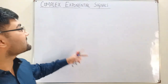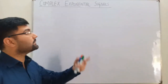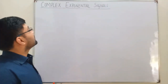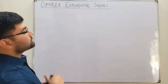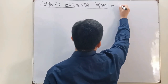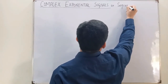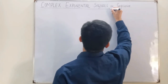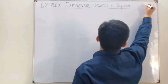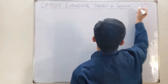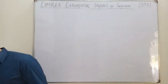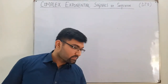The first type we saw were complex exponential signals in the continuous time domain. Today we see them in the discrete time domain. Here they are also called complex exponential signals or sequences. The term 'sequence' is used in the discrete time domain — I have not seen it used in the continuous time domain.